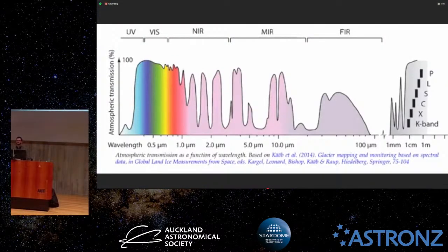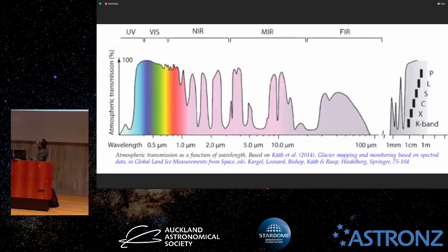If you want to observe in the infrared, I'm showing here how much light gets through our own atmosphere. In the visible it's most, in the UV it's not much, and in the near-infrared, mid-infrared, and far-infrared it's kind of patchy. So we fly above most of the atmosphere to get better reception.